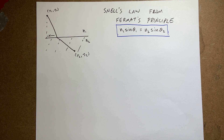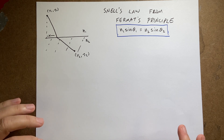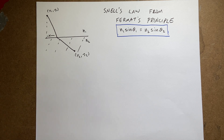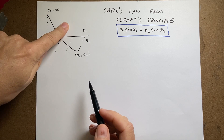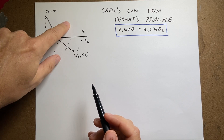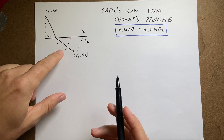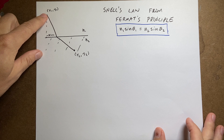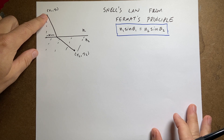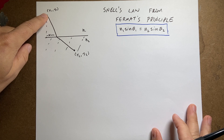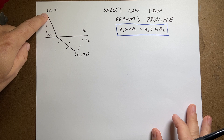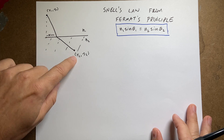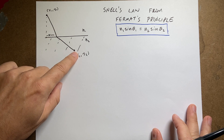This isn't really about optics. Let me explain the situation. I have two different materials — this could be air, this could be water. I have a light source right here making light that comes out, and I want to find the path for light to get to a point down here.